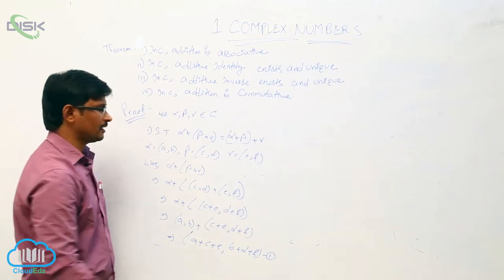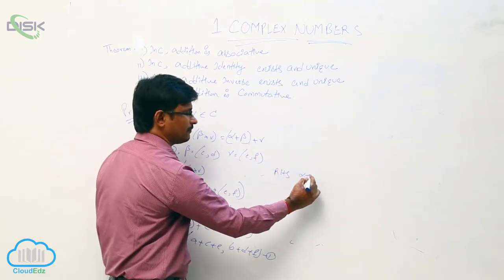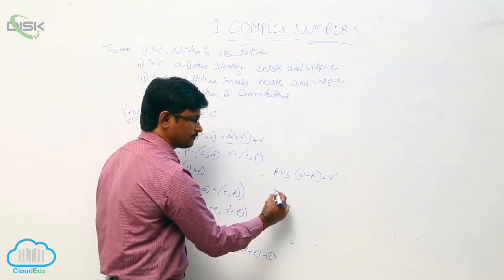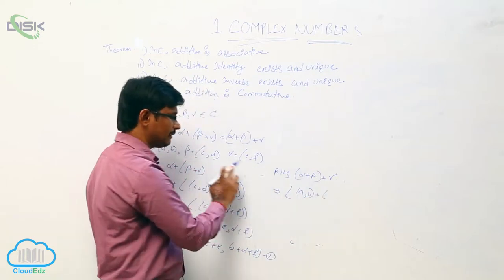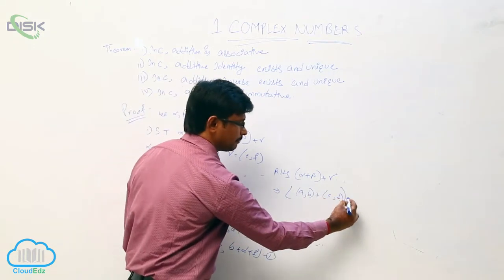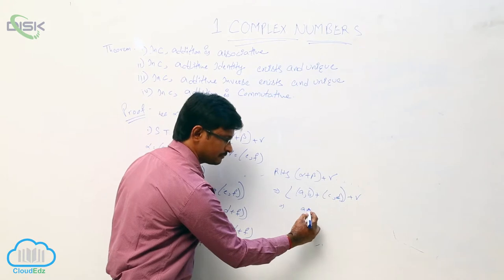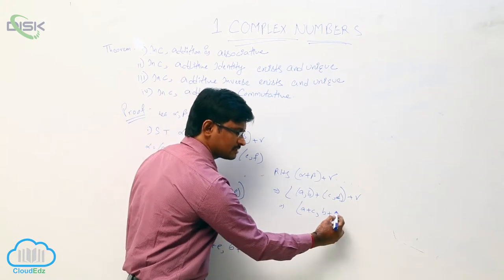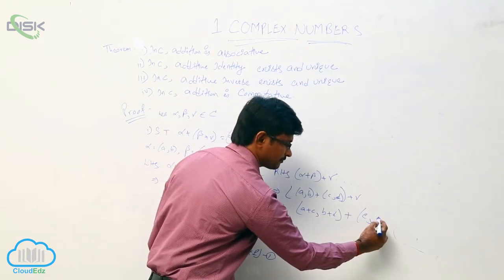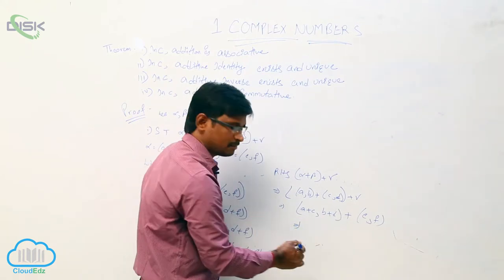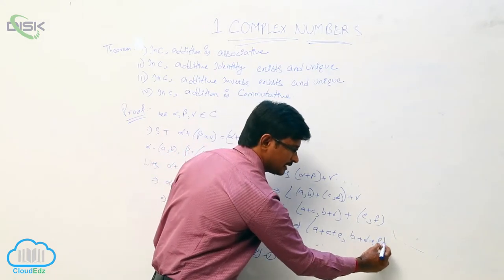Let it be equation one. Now we will see the RHS value. What is the RHS here? (Alpha plus beta) plus gamma. What is the alpha value? (a, b). So (a, b) plus beta value (c, d) — if you add these two, we get (a+c, b+d) plus gamma value (e, f). Adding these two complex numbers: (a+c+e, b+d+f). Let it be equation number two.